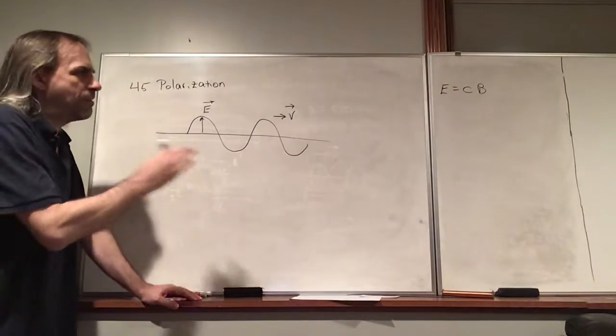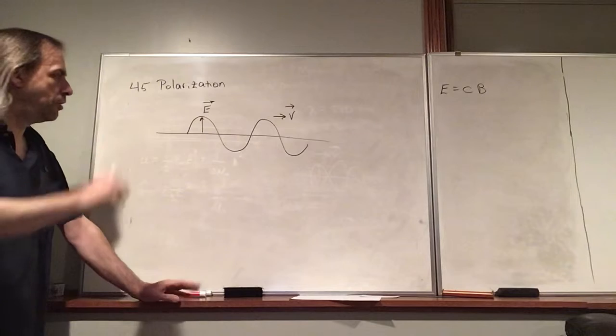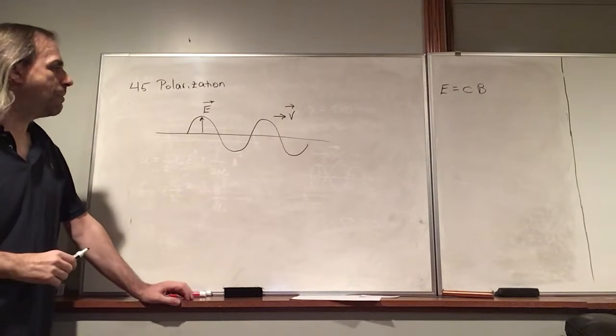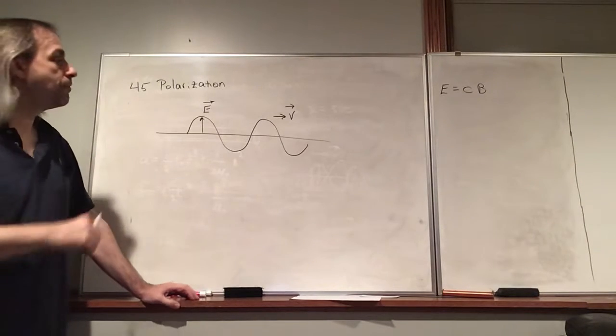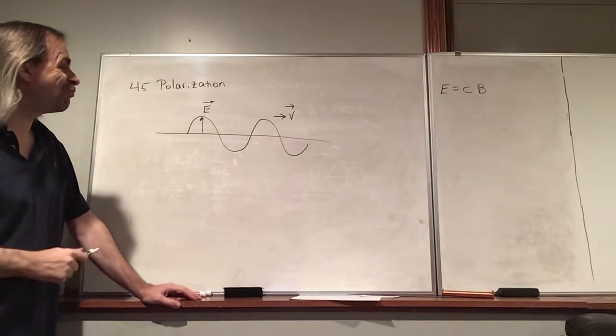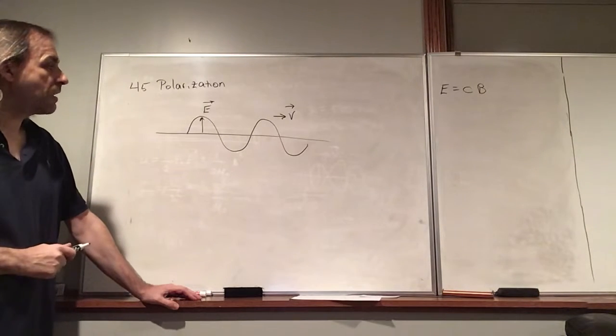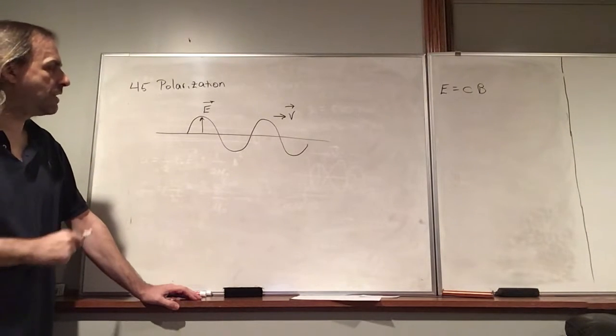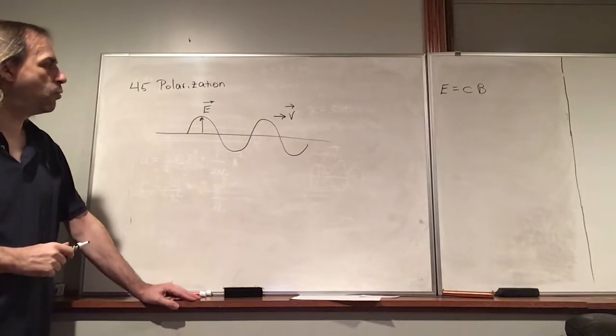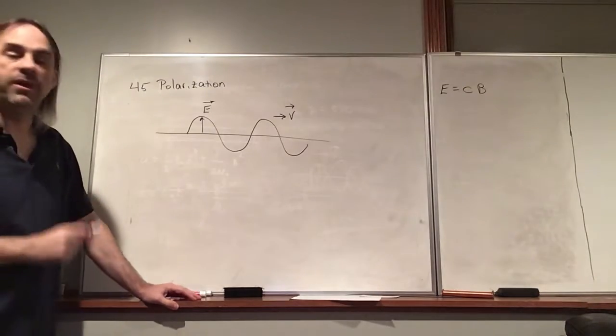Just knowing the electric field, you know the magnetic field as well, which is convenient because vectors are kind of complicated enough. If you have a single wave that consists of two vectors acting differently, that could complicate things. We're talking about a nice, simple wave in a vacuum, so we can just describe it with the electric field.